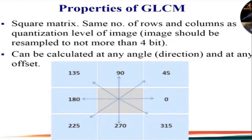The gray level co-occurrence matrix (GLCM) is one such technique which gives us not only intensity values but also the distribution of the intensities. Before we generate the co-occurrence matrix, we discuss the properties of the GLCM. It is a square matrix — it has the same number of rows and columns as the quantization level of the image, which should be resampled to not more than 4 bits.